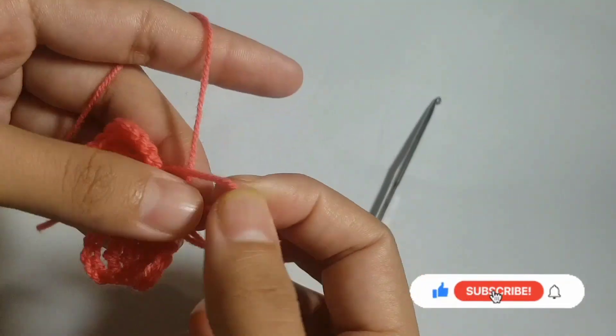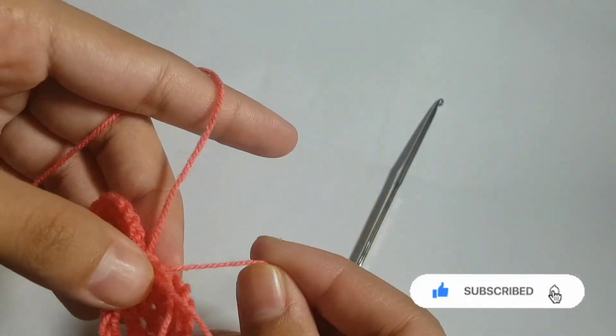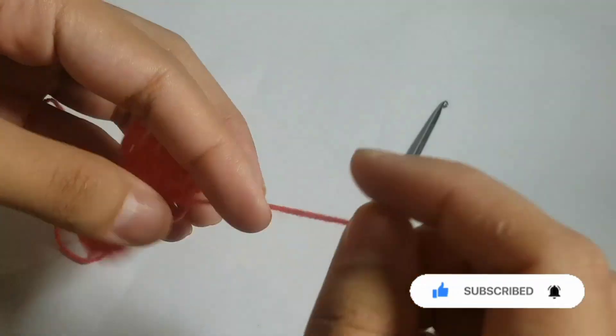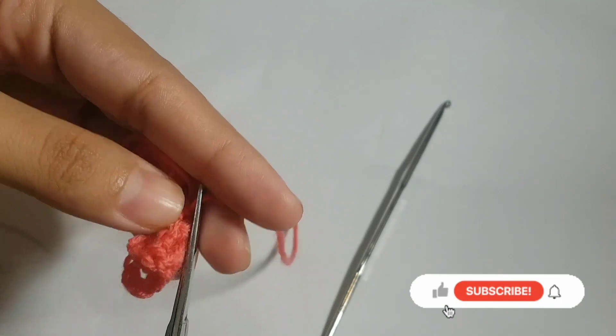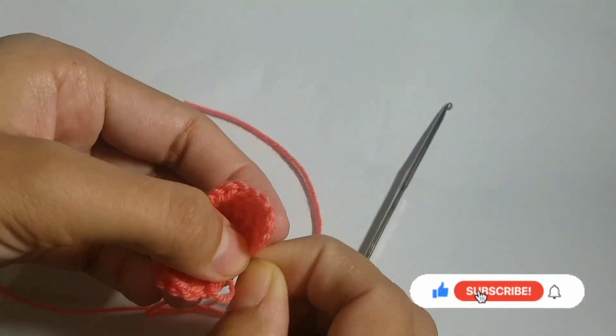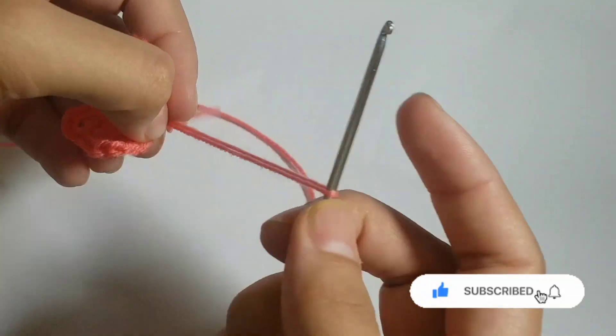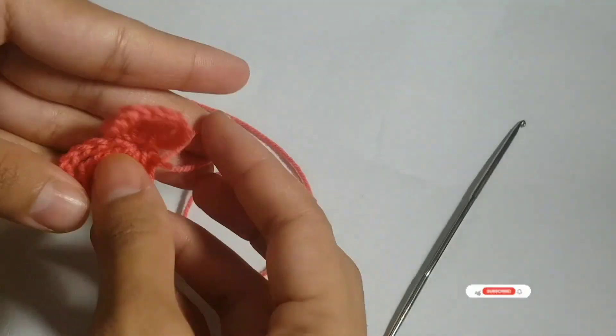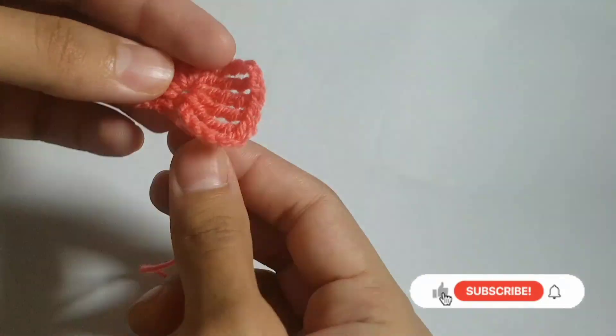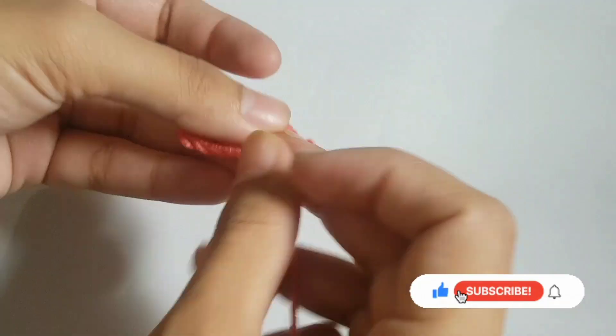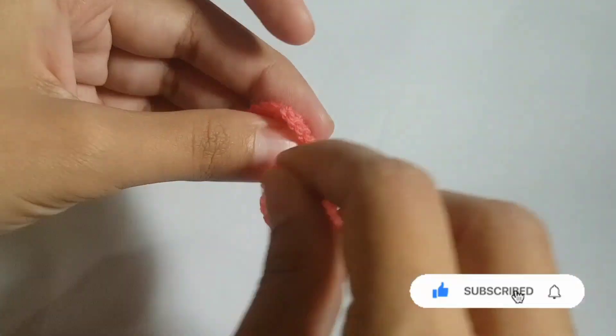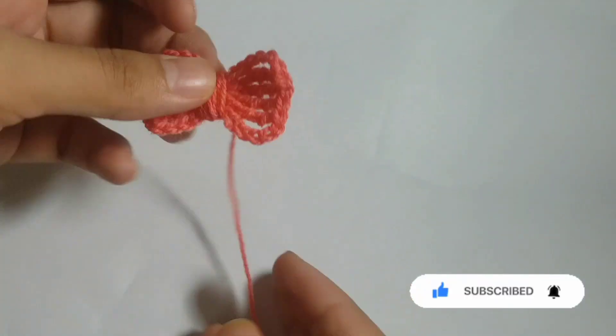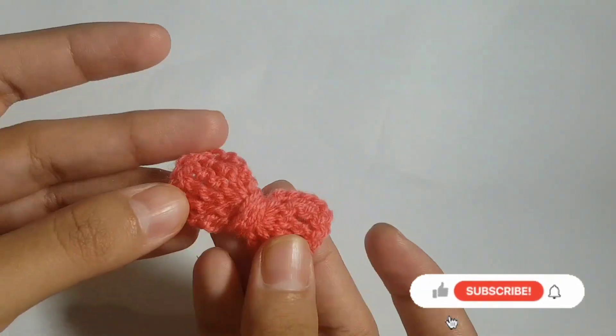Now we will pull the end of the yarn and cut it down. We will also cut the working yarn, and then wrap it around the bow. After wrapping the yarn, we will fix the end with the help of the crochet hook.